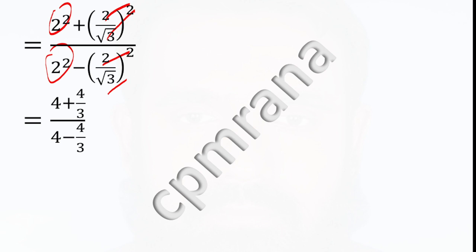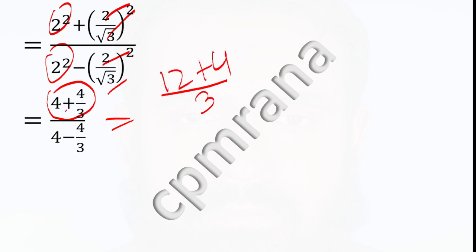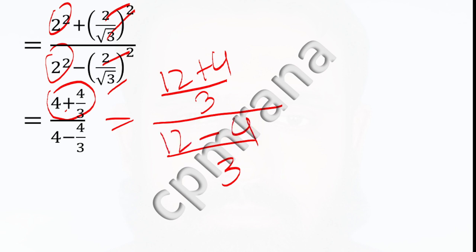So, taking the common denominator here, multiplying 1 by 3 gives 3, then 3 multiplied further gives 4. So 3 large 4 gives 12 plus 4, and on the other line multiplying 1 by 3 gives 3, and here 3 gives 12 minus 4. So 2 squared is 4, giving us r equals 4.